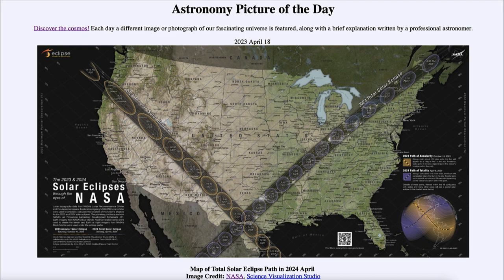Anyone in the eastern half of the United States will get to see at least a very good partial eclipse. But if you are in that path, you will get to see a total eclipse of the sun — the moon will completely block out the sun and it will become dark in the middle of the day. So we have two chances: one to see an annular eclipse in October, and another to see a total eclipse in April.